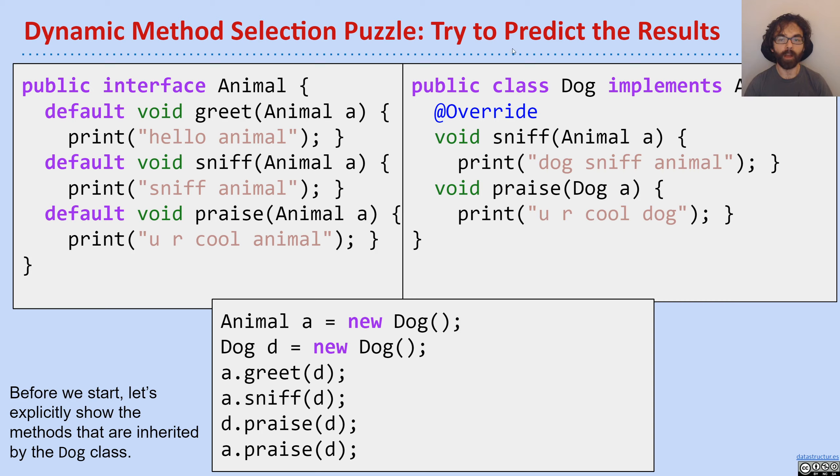They take animal arguments. On the right, I have a Dog class which implements Animal, and it has a sniff animal method and a praise dog method. That's the whole situation.